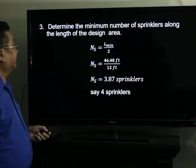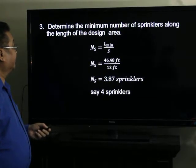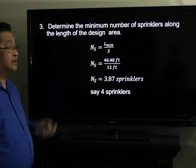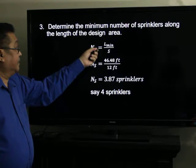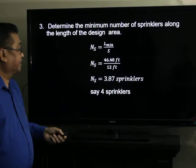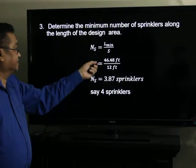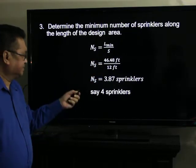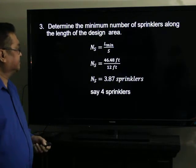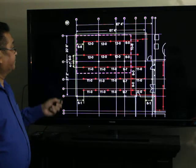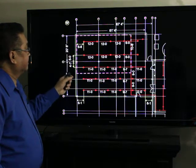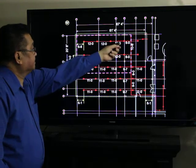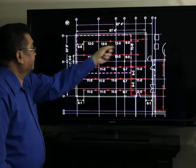Determine the minimum number of sprinklers along the length of the design area. The minimum number of sprinklers, N sub S, will be equal to L subminimum divided by the sprinkler spacing. So 46.48 feet divided by 12 feet gives 3.87 sprinklers, so 4 sprinklers. You have 4 sprinklers in your length.